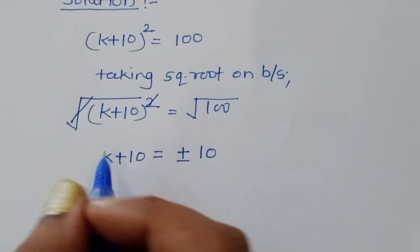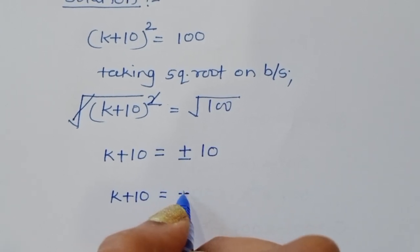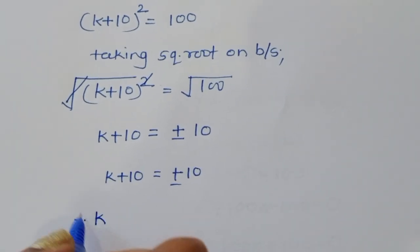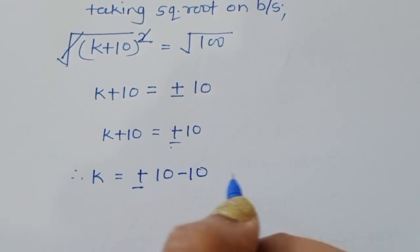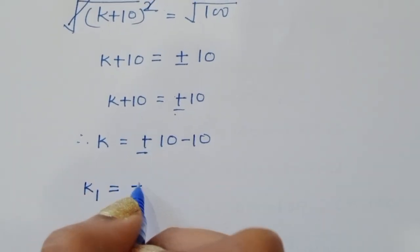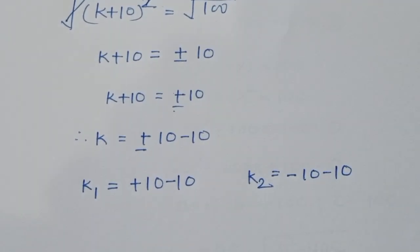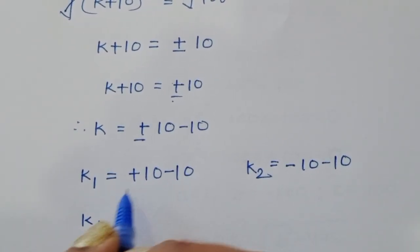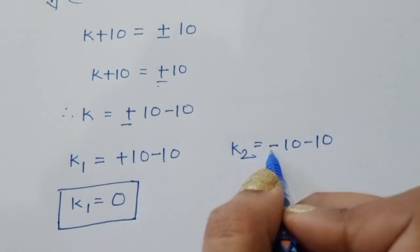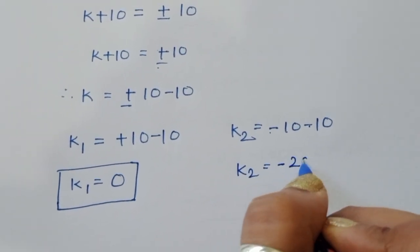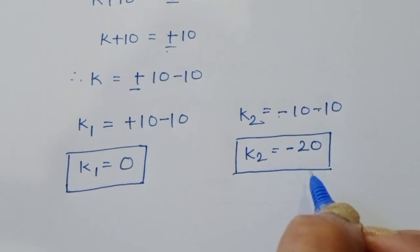We got k + 10 = +10 and k + 10 = -10. Therefore, k₁ = +10 - 10 = 0, and k₂ = -10 - 10 = -20. So we have two solutions: k = 0 and k = -20. This is the first method.